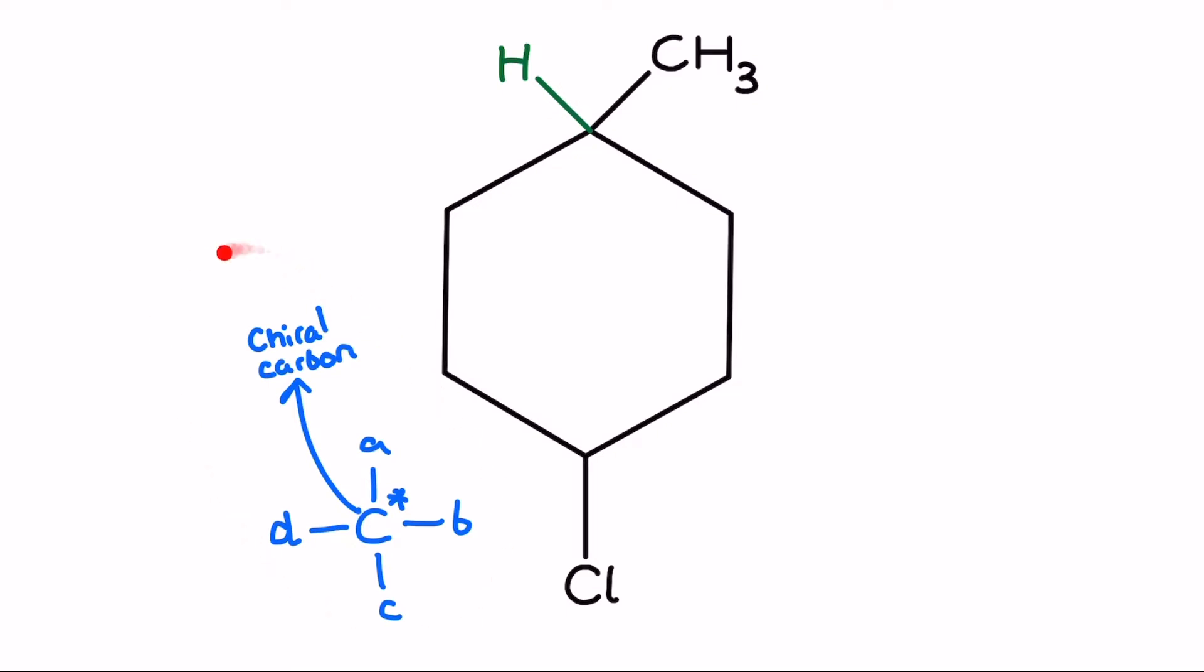One which is bonded to four different atoms or groups because we've got the hydrogen as one group up here, the CH3 is another, and then the two directions around the ring here which could potentially classify as two separate groups.